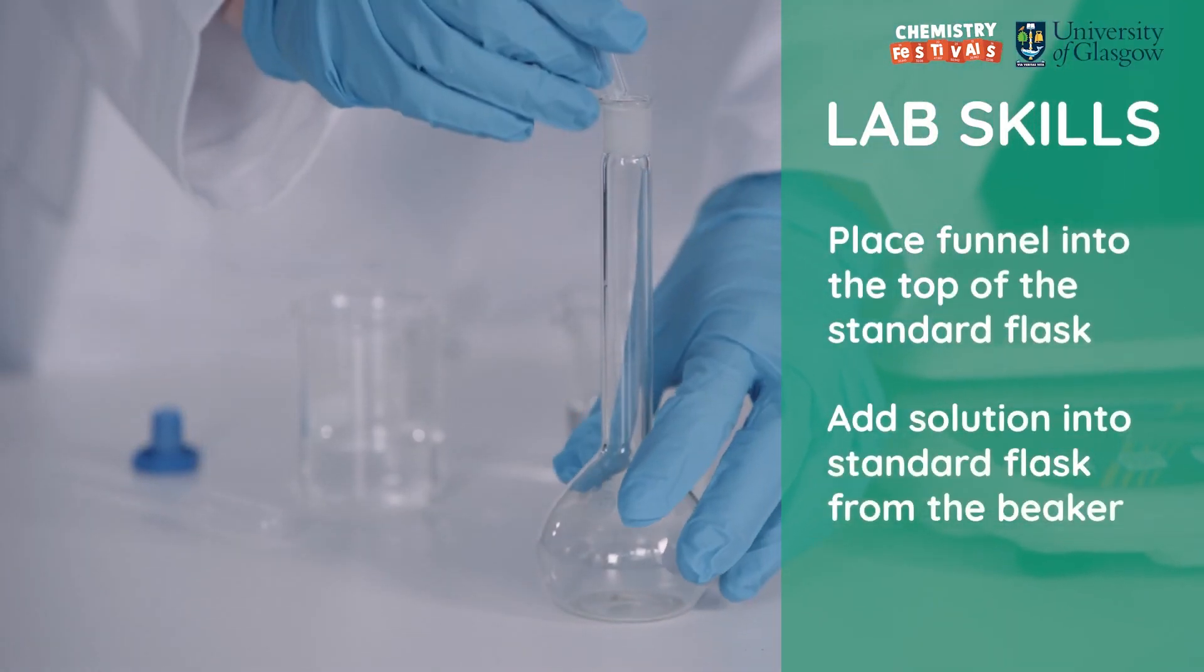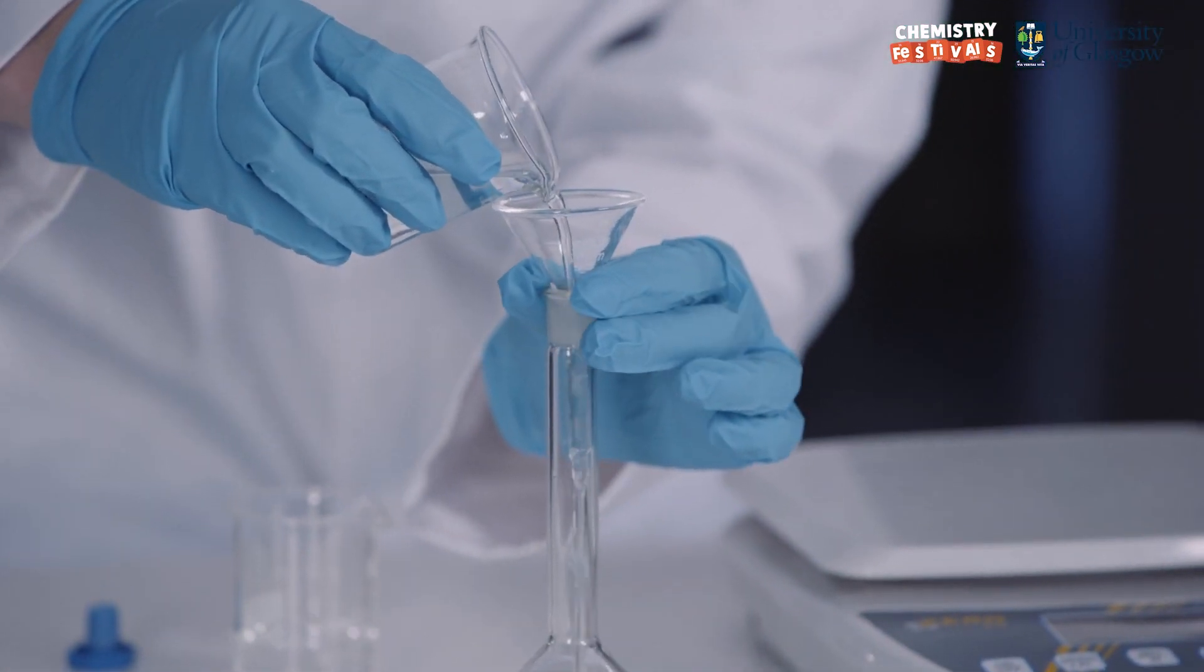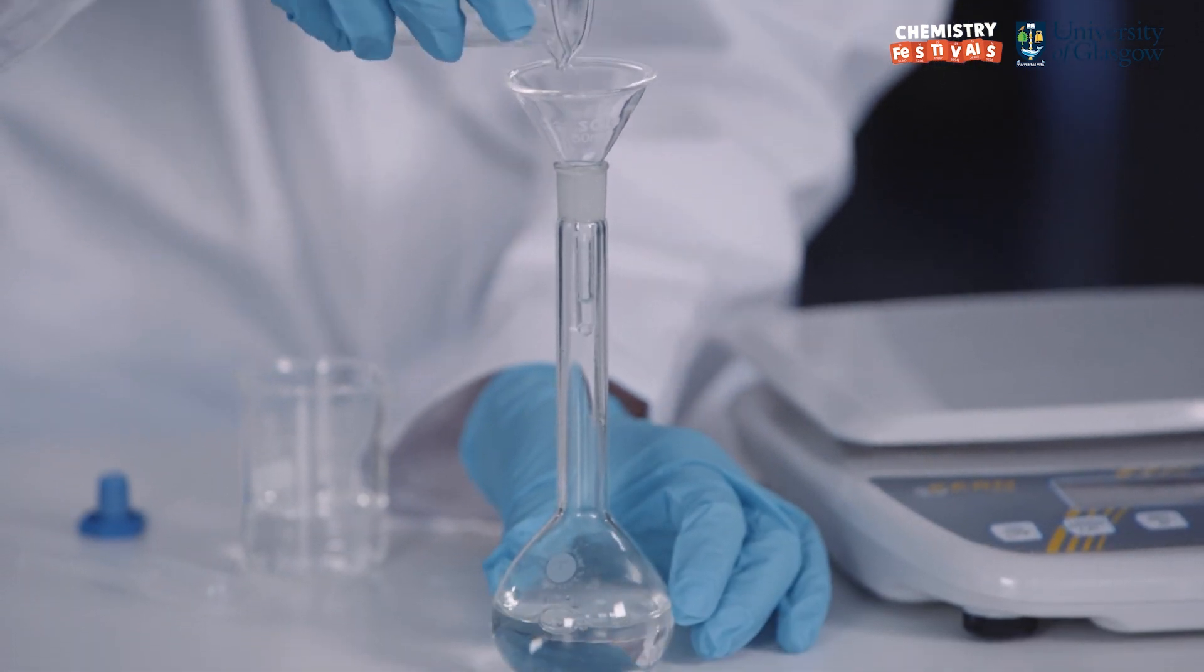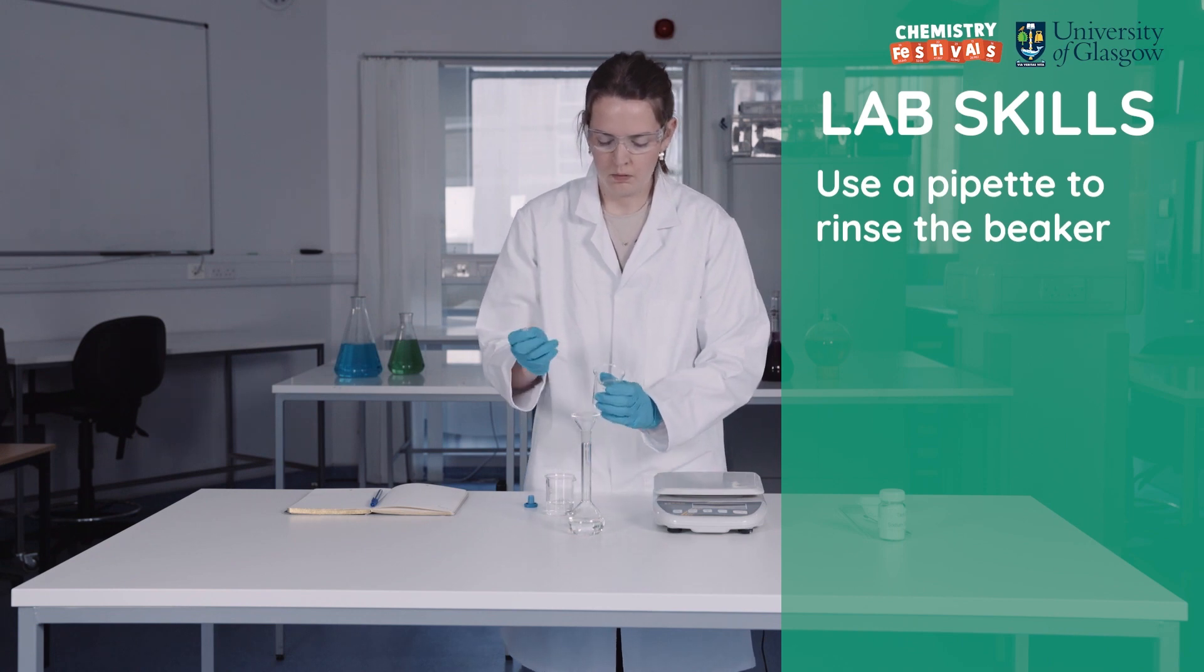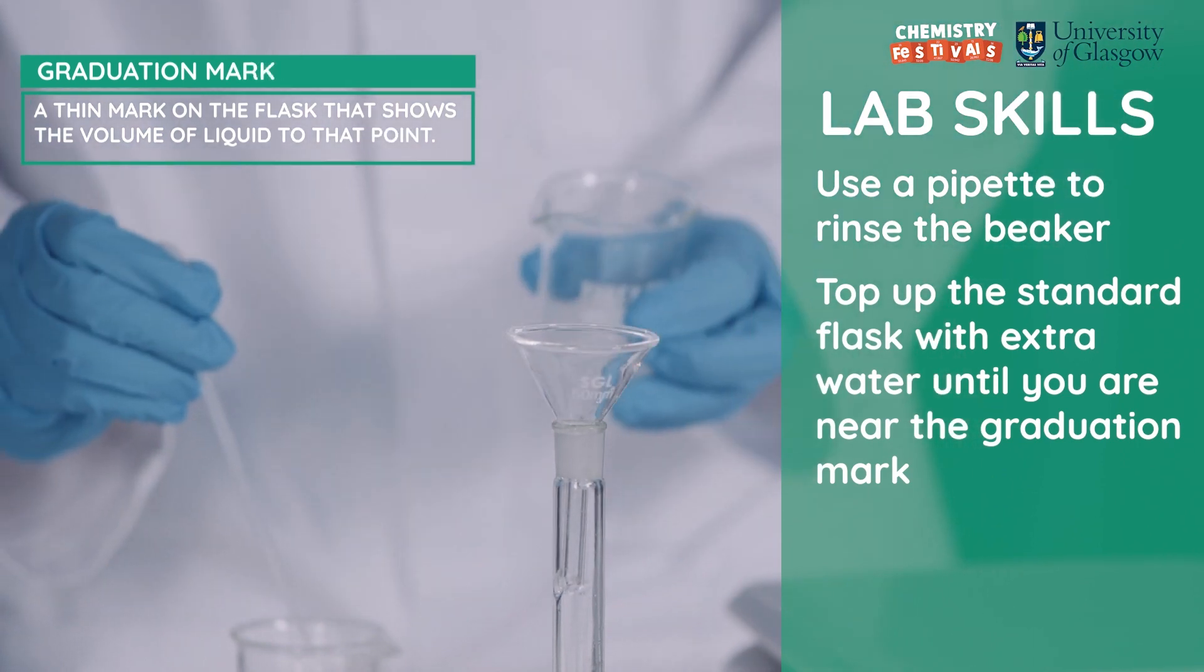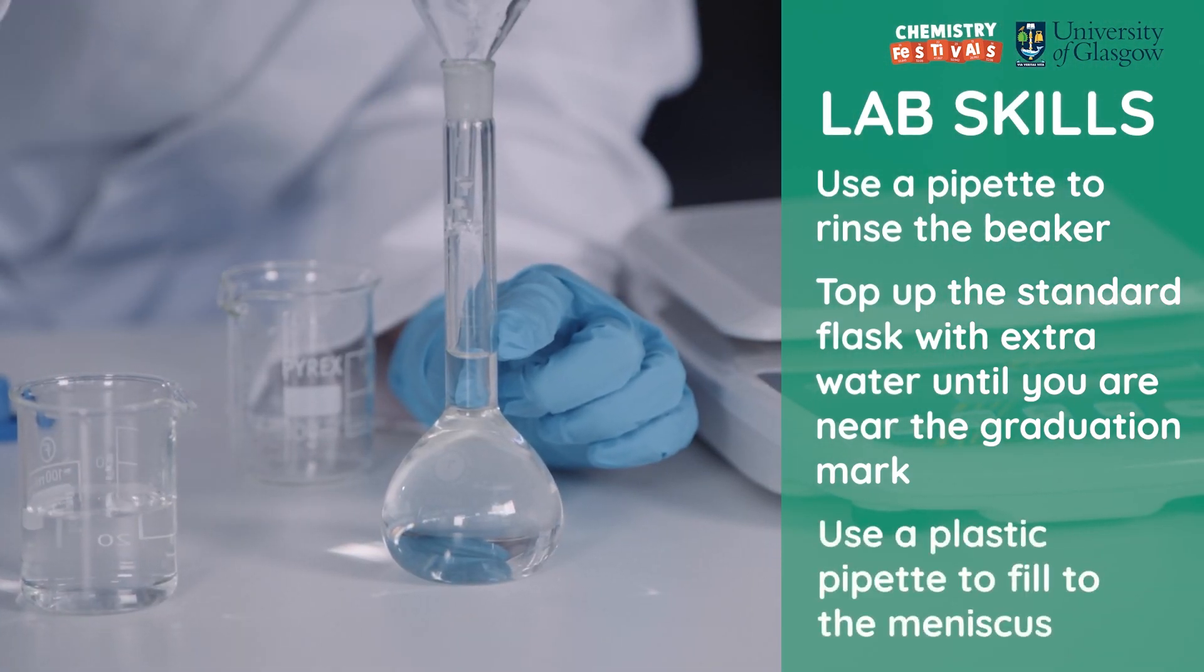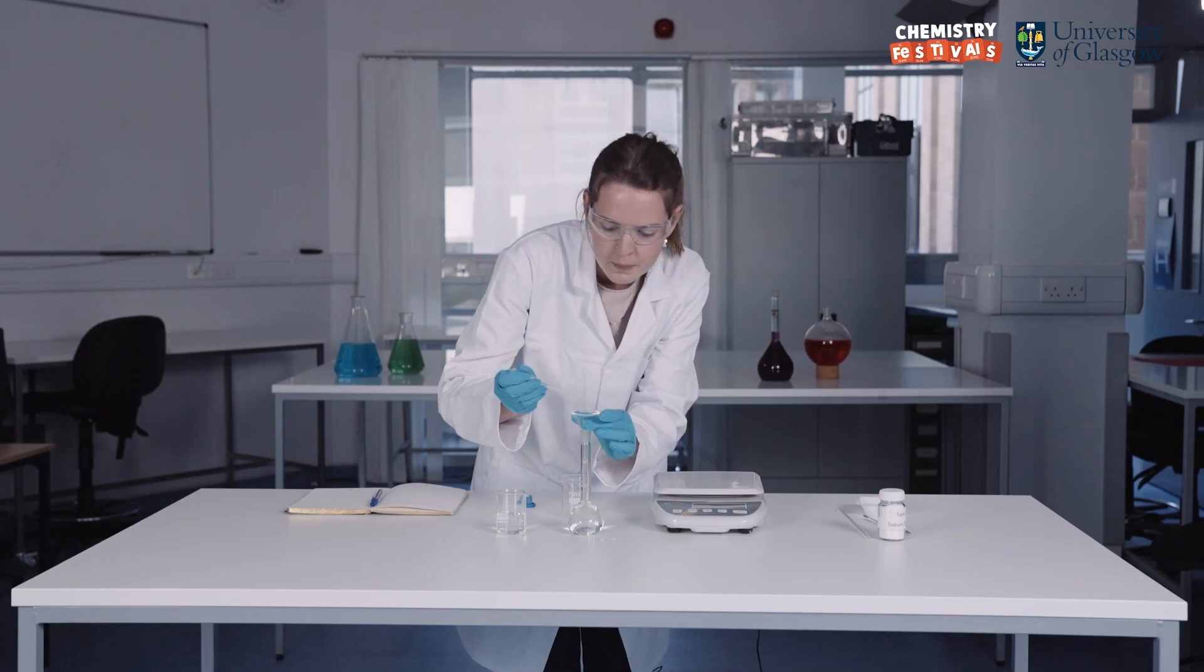Next I will put the funnel into the standard flask and add the solution from the beaker. Rinse the beaker using a pipette to make sure there's no chemical left. Top up with extra water until you are near the graduation mark. Then use a plastic pipette to fill to the meniscus. The meniscus is the bottom of the curve of the solution in the standard flask.